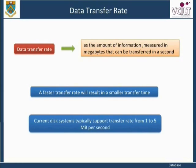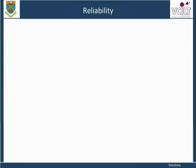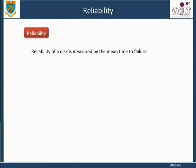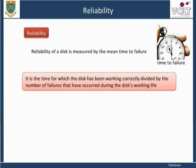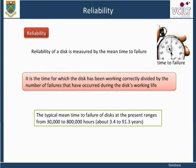Current disk systems typically support transfer rates from one to five megabytes per second. Reliability of a disk is measured by the mean time to failure — that is, the time for which the disk has been working correctly, divided by the number of failures that have occurred during the disk's working life. The typical mean time to failure of disks at present ranges from 30,000 to 800,000 hours, about 3.4 to 91.3 years.